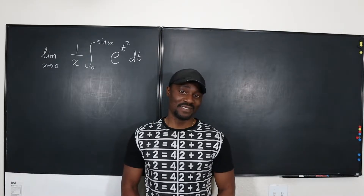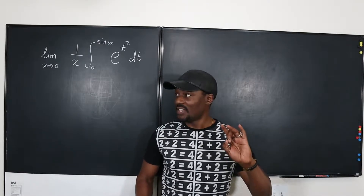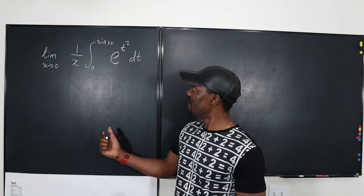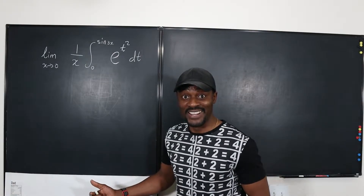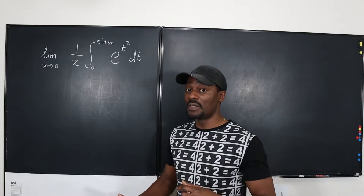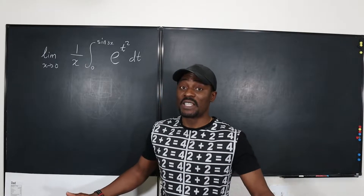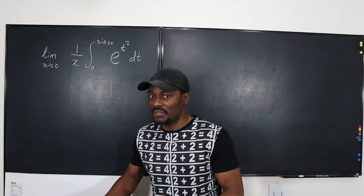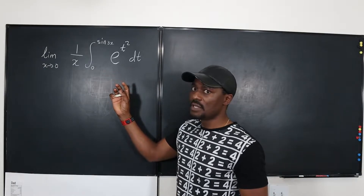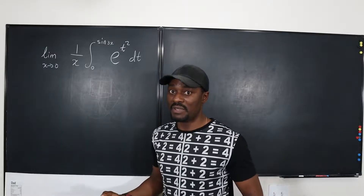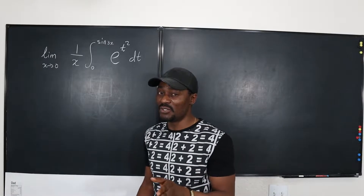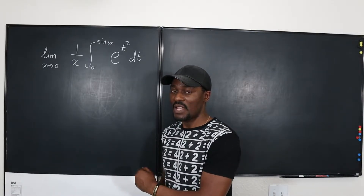Hello, and welcome to another video. This one is a limit problem, and we're going to take the limit of 1 over x and an integral. This kind of limit is something you don't see until you have learned how to do integration, or at least the fundamental theorem of calculus, because if you don't know how to integrate, you can't do a limit. Usually limits show up at the beginning of calculus 1, but now there's something else you need to use. So let's look at it.